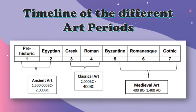Here is the timeline of the different art periods that we are going to talk about. First is the prehistoric and Egyptian arts during 1.5 million BC to 2000 BC — BC means Before Christ. Second is the Greek and Roman art during 2000 BC to 400 BC. And last is the Byzantine, Romanesque, and Gothic period during 400 BC to 1400 AD.